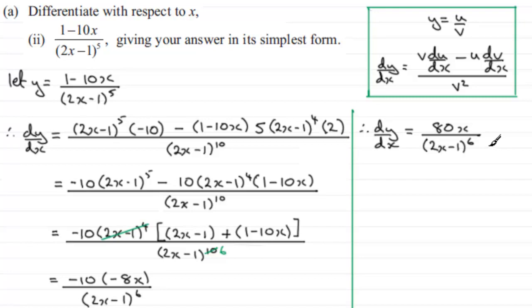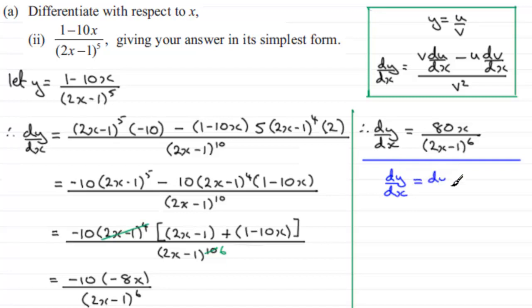I said I would show how I differentiated (2x minus 1) to the power 5 using the chain rule. As a quick reminder, the chain rule states that dy/dx equals dy/dt multiplied by dt/dx — the dt's cancel, leaving dy/dx.